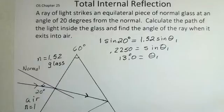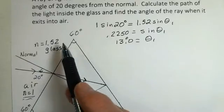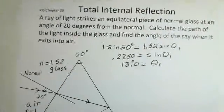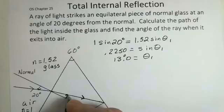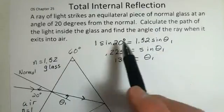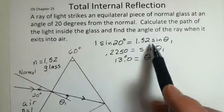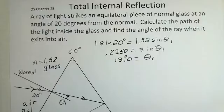The index of refraction of air is 1, and the index of refraction of normal glass is 1.52. Our task is to apply Snell's Law first and find the first angle in the glass — I'll call it theta 1. Snell's Law gives us: index of refraction of air times sine of the angle in air equals 1.52 times sine of the ray angle in the glass.